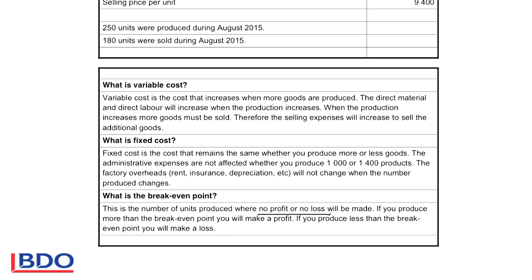So if I want to make a profit, I must make more than 200 articles, otherwise this business will never make a profit. If I realize that we are not making 200 articles, it means that we are working at a loss and we will have to do something to increase the number of units produced and the number of units sold.